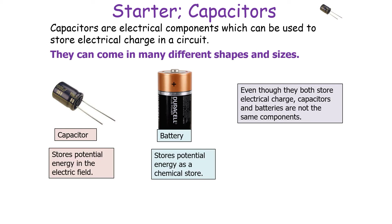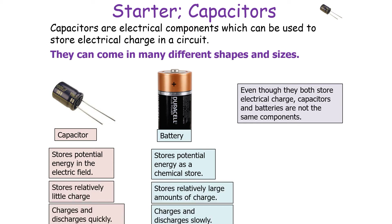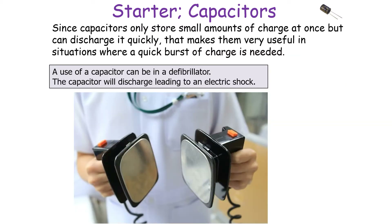A capacitor stores electrical potential energy in the electrical field, whilst a battery stores chemical energy. A capacitor can store relatively little charge and charges and discharges quickly, whilst a battery stores a relatively large amount of charge but can only charge and discharge slowly. Since capacitors can only store small amounts of charge but can discharge very quickly, this makes them very useful in situations where a quick burst of charge is needed.